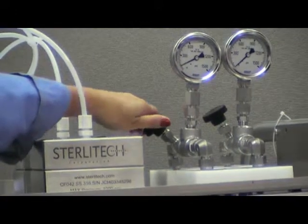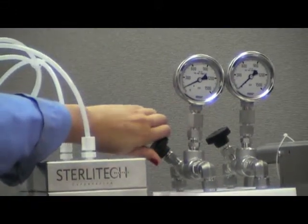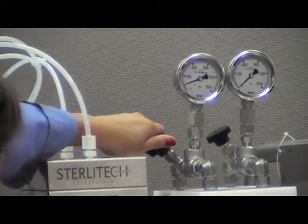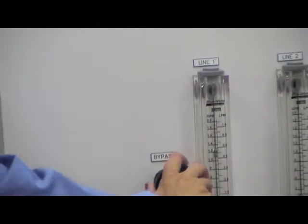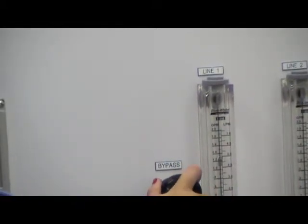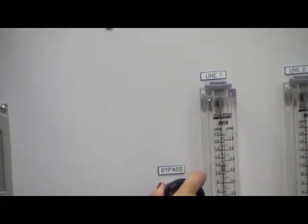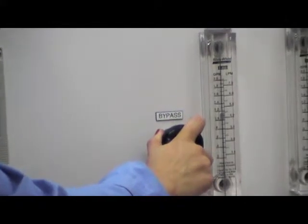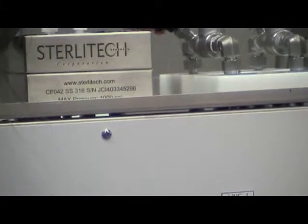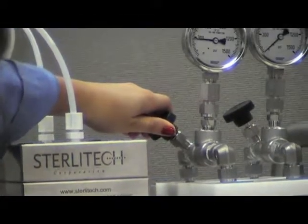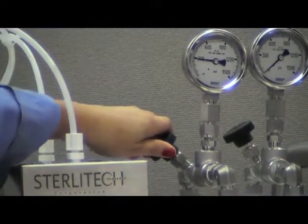We're slowly starting to see the pressure gauge work its way up to 300 psi and I'm trying to maintain the flow at about 1.4 gallons per minute. To do so I have to constantly or consistently adjust the bypass valve. And we're there.